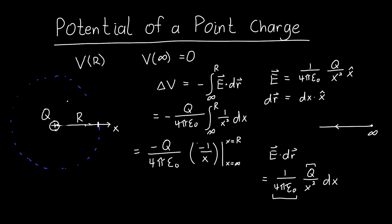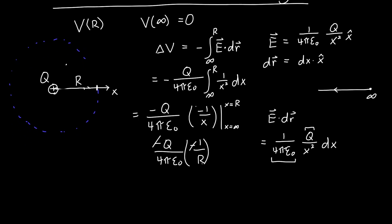So when x equals infinity this is just zero. So this just becomes negative 1 over R. So negative Q over 4π epsilon naught times negative 1 over R. The two negatives cancel out and we're left with our final potential as a function of the distance away which is Q over 4π epsilon naught R. And this is our answer.